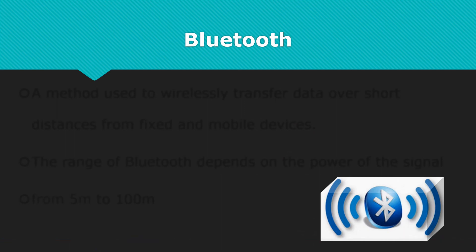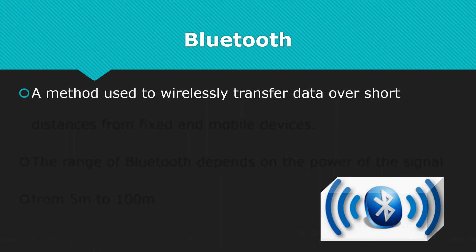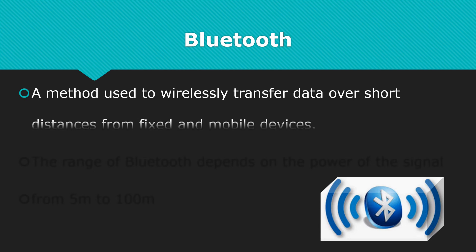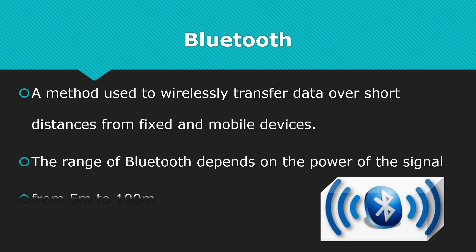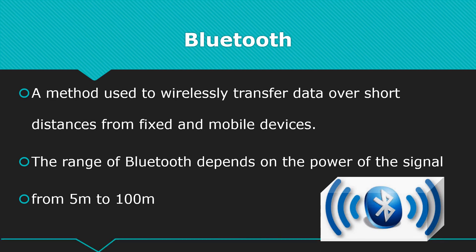Bluetooth is a method used to wirelessly transfer data over short distances from fixed and mobile devices. The range of Bluetooth depends on the power of the signal, and it can typically be from 5 meters to 100 meters.